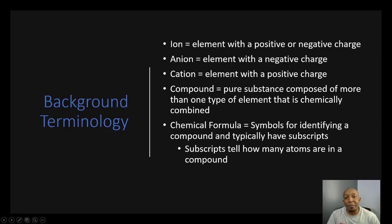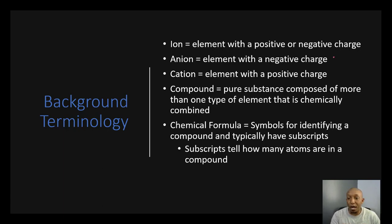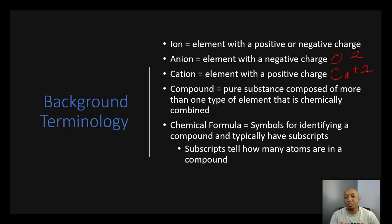Let's start off with some background terminology. An ion is an element with a positive or negative charge. An anion is an element with a negative charge — for example, oxygen can have a negative 2 charge. A cation is an element with a positive charge — for example, calcium can have a positive 2 charge.